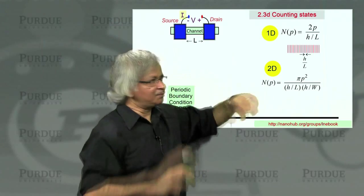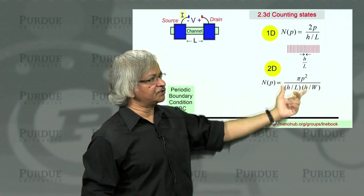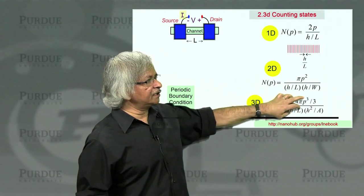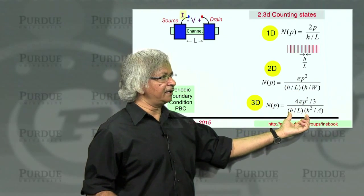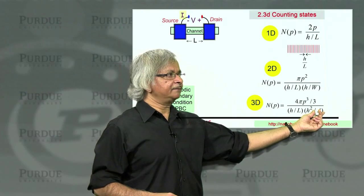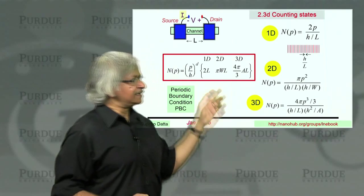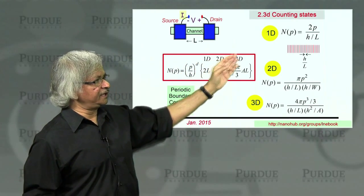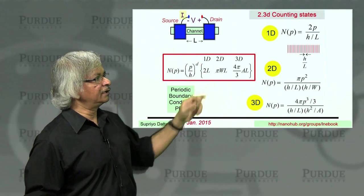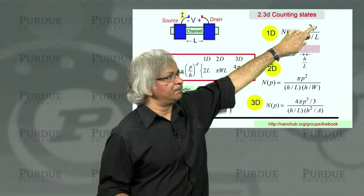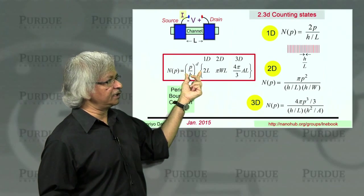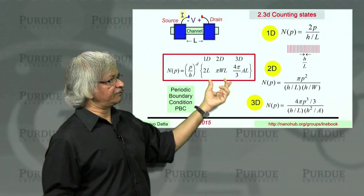And you can probably guess what the answer would be for three dimensions. Instead of the area of a circle, you have the volume of a sphere. And you then divide it by h over L, and then h over W1, h over W2 - you've got these two widths. And the product we have written as area. So you could collect all this together and write a single expression for N(p) in these three cases, the three dimensions: 1D, 2D, and 3D. And the N(p) is proportional to p to the power number of dimensions. That is, in one dimension, it's proportional to p to the power 1. Two dimensions is p to the power 2, p squared. Three dimensions is p cubed, p to the power 3. So that's what we have written out here as (p/h)^D. And then the other factors are all in here.